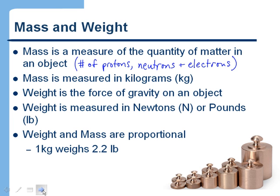As I mentioned a minute ago, weight and mass are proportional. So for example, if you have an object that has a mass of one kilogram, here on the surface of the Earth that weighs 2.2 pounds.